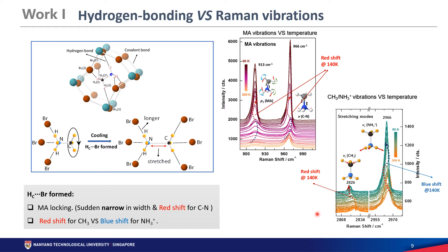Similarly, looking at the CH3 vibration separately, at 140 Kelvin it also shows a red shift and the peak becomes sharper. Another peak at around 183 cm⁻¹ at 140 Kelvin shows a blue shift rather than a red shift, indicating the NH bond actually strengthens. By doing a detailed analysis of all these vibrations, you can determine the status of the CH3 and NH3.